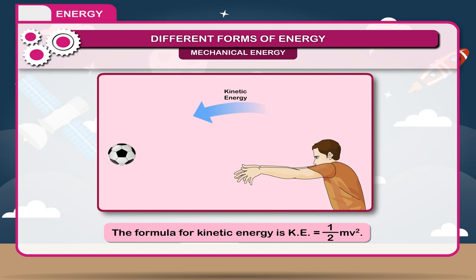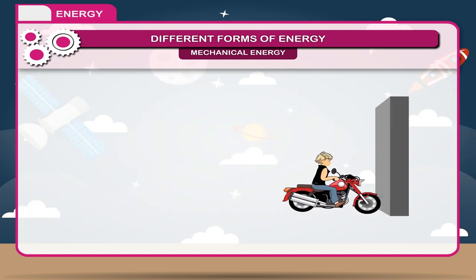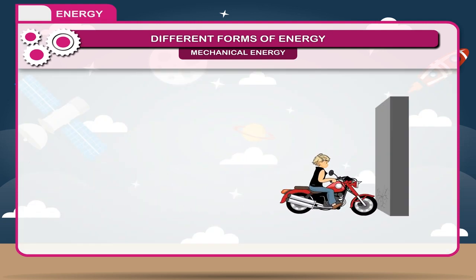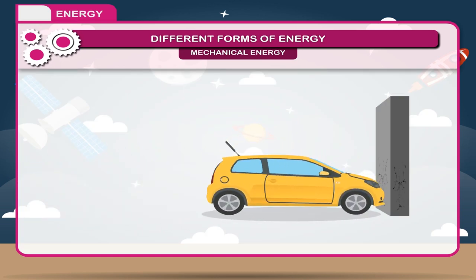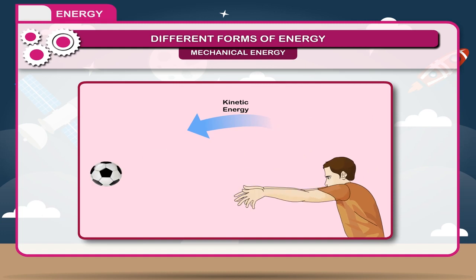Since kinetic energy is directly proportional to mass, if the mass of a body is doubled, the KE also gets doubled; if the mass is halved, the KE also gets halved, provided velocity remains the same. If velocity is doubled, kinetic energy becomes four times, since KE is directly proportional to velocity squared. If the velocity is halved, its kinetic energy becomes one fourth.